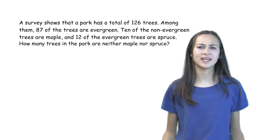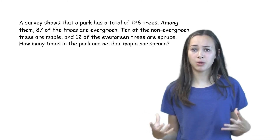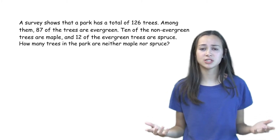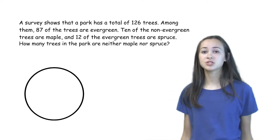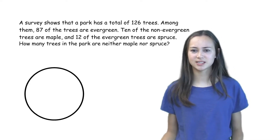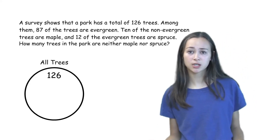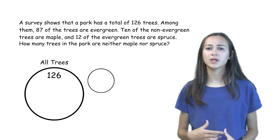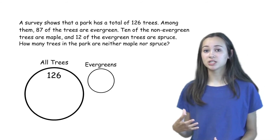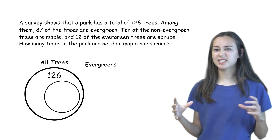So how do we show that the evergreen, the spruces, and the maples are all trees inside the park? And how do we show that the spruce trees are part of the evergreens, and the maple trees aren't? Instead of using boxes, we can use circles to represent the different categories of trees. First, we can draw a large circle to represent all of the trees in the park. Next, we can draw a circle representing the evergreens, and since the evergreens are part of the trees in the park, we will draw the circle inside the large circle.